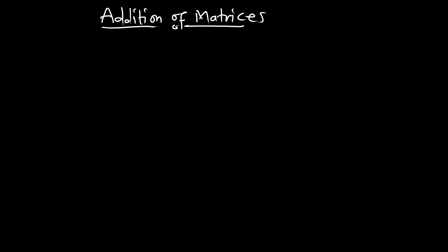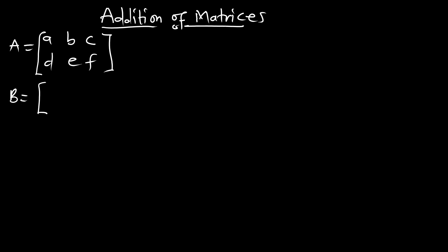Let's assume we are given a matrix A with members A, B, C — this is matrix A. And we have a matrix B which is also A, B, C, D, E, and F. We want to perform an operation which is A plus B — we want to add these two matrices.